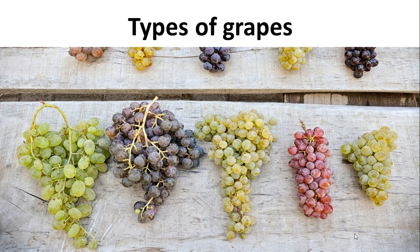First of all, I want to tell you that these are not the same grapes which we find in the market or which we eat. Those are called table grapes and there are some differences: those grapes do not have seeds, they are thin-skinned. Wine grapes are smaller in size, have thick skin, and have seeds. The skin gives tannin, character, and power to the wine.